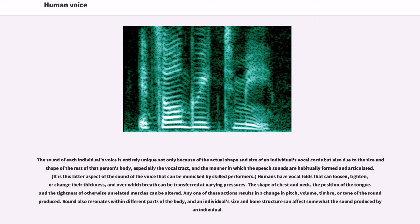Humans have vocal folds that can loosen, tighten, or change their thickness, and over which breath can be transferred at varying pressures. The shape of chest and neck, the position of the tongue, and the tightness of otherwise unrelated muscles can be altered. Any one of these actions results in a change in pitch, volume, timbre, or tone of the sound produced. Sound also resonates within different parts of the body, and an individual's size and bone structure can affect somewhat the sound produced by an individual.